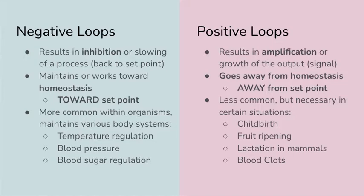Positive feedback loops, though less common, are still necessary in certain situations. Childbirth and the contractions of the uterus in order to deliver a child is obviously really important for mammals. Fruit ripening — producing ethylene, for example — is another positive feedback loop that's necessary for the ripening of apples on a tree. Lactation in mammals is also helped by positive feedback loops in the release of oxytocin, and blood clotting as well, which we'll go over as an example in this video.